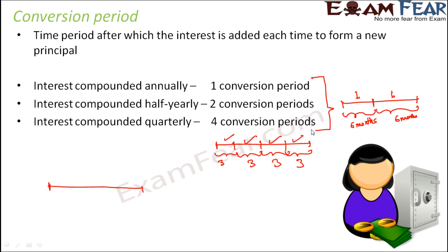This is very important as far as compound interest calculation is concerned, because most of the time students make mistakes in understanding this concept. In compound interest, the main point is that the principal amount doesn't remain the same throughout — it changes. When it will change depends on how the interest is compounded: if annually, it changes every year; if half yearly, every six months; if quarterly, every three months and so on.